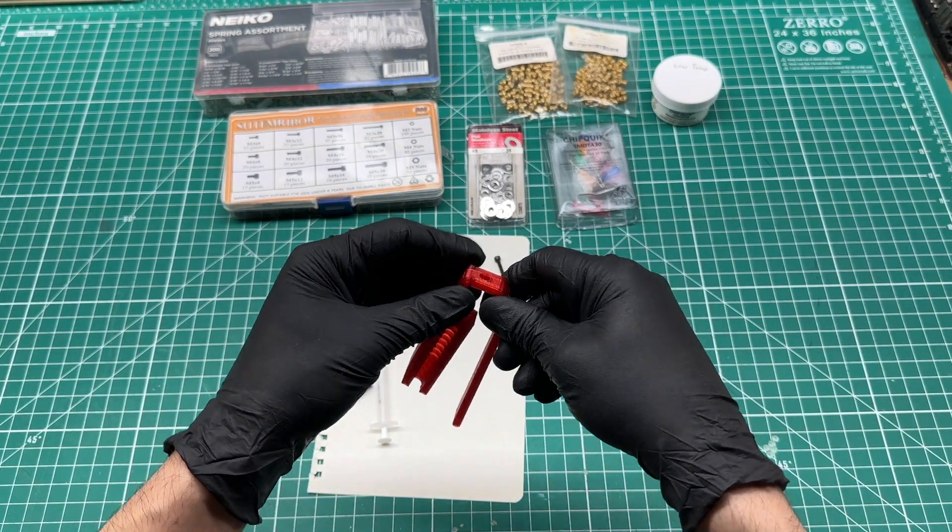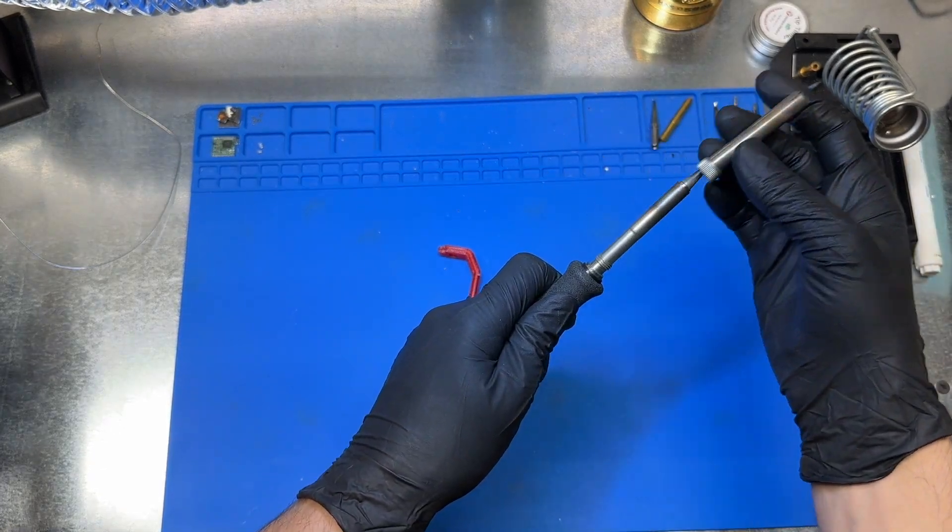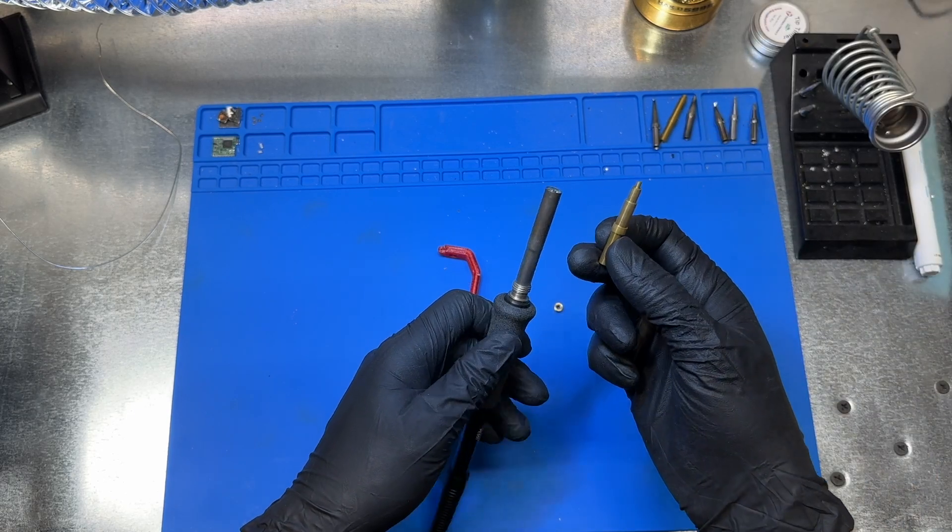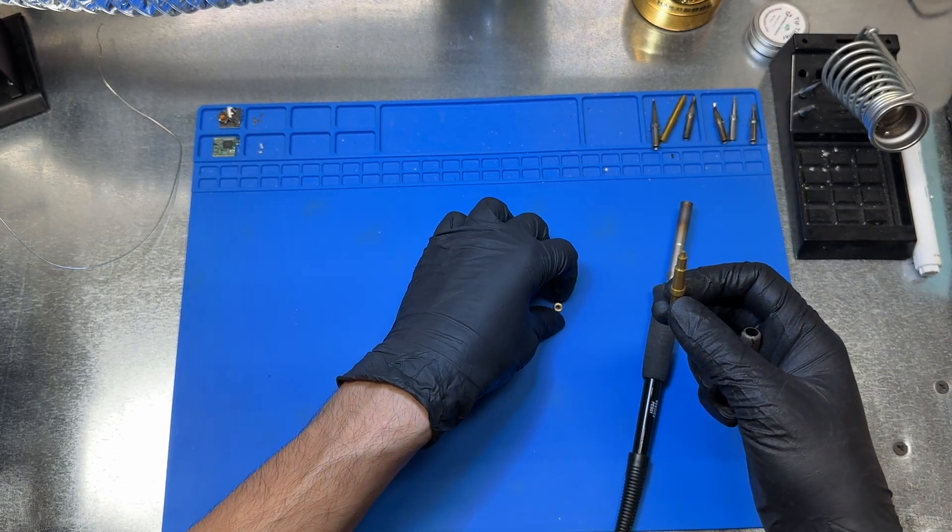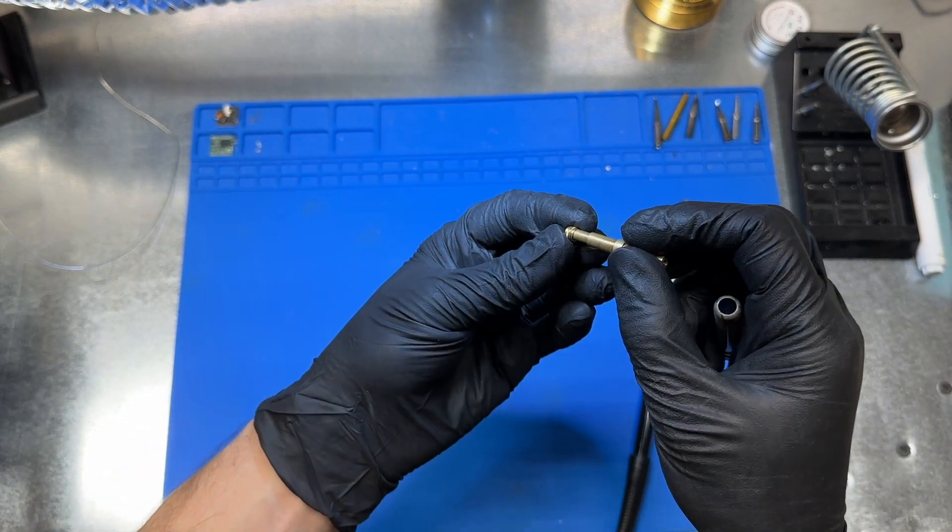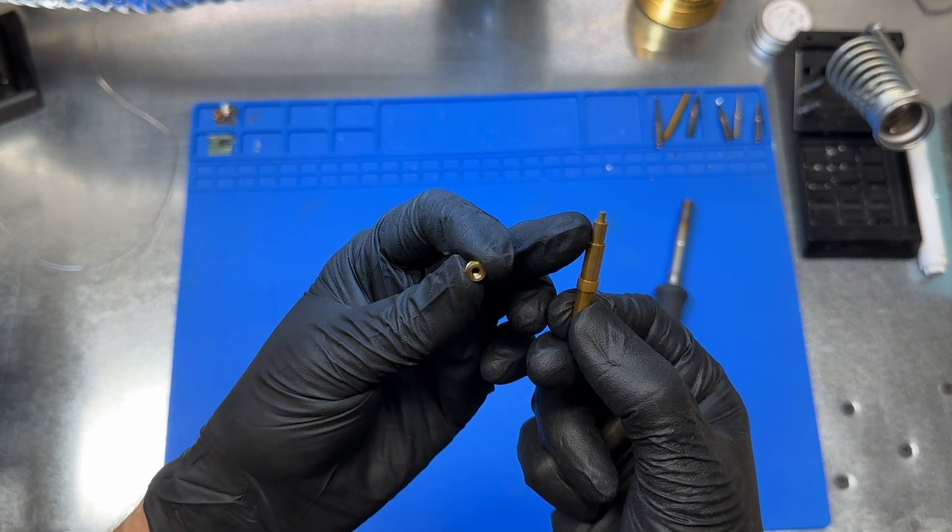Let's start by melting the heat set insert into the handle. I'll swap out my soldering iron tip for this awesome one that's designed for heat set inserts. It has nice square edges and isn't tapered like a regular soldering tip. This allows it to make good contact for heat transfer and won't get stuck like a regular tip can. I'll put links in the description below for the iron tips and for the heat set inserts that I use.